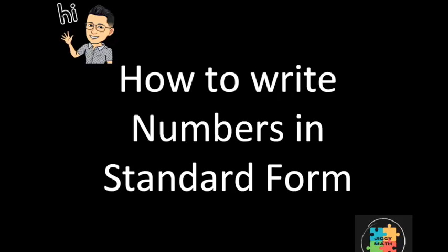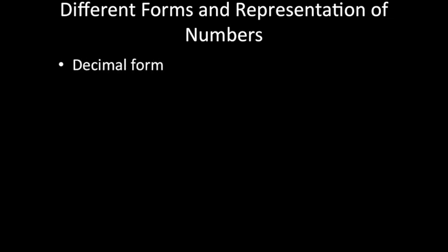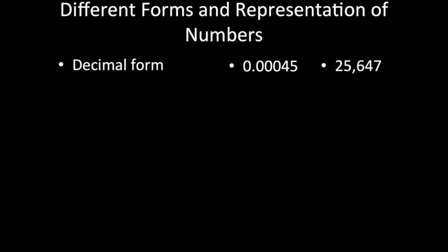Hello once again and welcome to Jiggy Maths. This time we are going to talk about one of the essential things you need to know: how to write numbers in standard form. It sounds very primary, but it is not. There are different forms and representations of numbers. One of which is decimal form — for example, 0.00045 or an ordinary number like 25,647. These two numbers are written in decimal form.